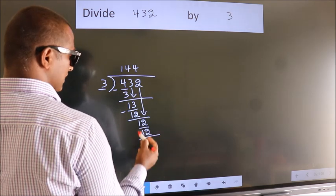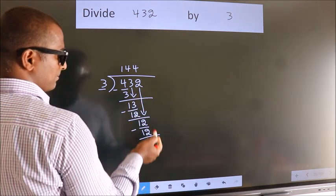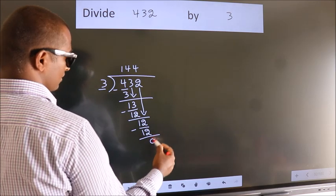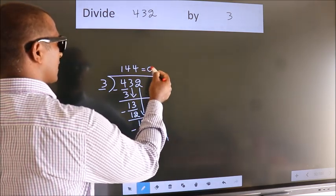Now, we subtract. We get 0. No more numbers to bring it down. So, we stop here. This is our remainder. This is our quotient.